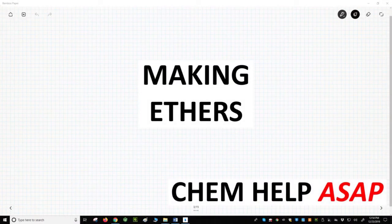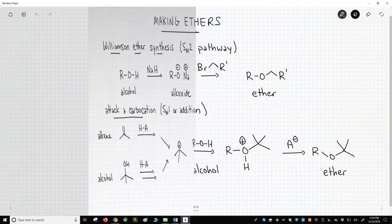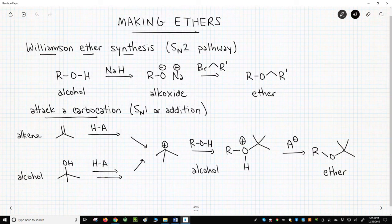Welcome to Chem Help ASAP. Let's review the methods for making ethers. Ethers are oxygens capped by two R groups, so it's natural to think about making an ether from an alcohol and then adding a second R group.